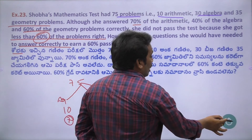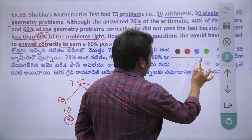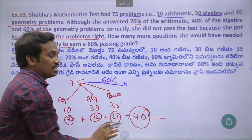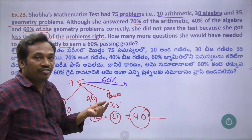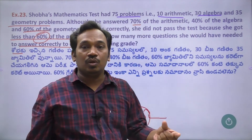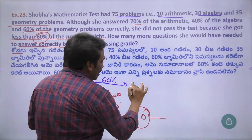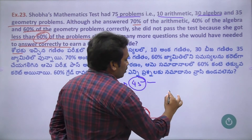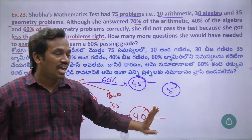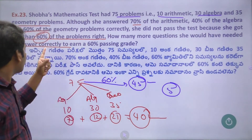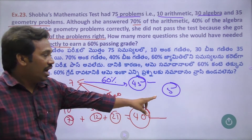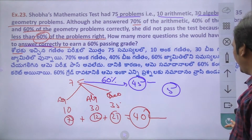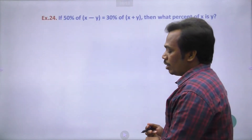60% of 75 total problems equals 45 questions needed to pass. She answered 7 plus 12 plus 21 equals 40 questions correctly. So she needs 45 minus 40 equals 5 more questions answered correctly to pass the test. The answer is 5. This is very simple.